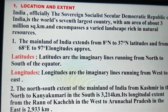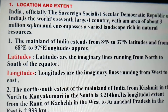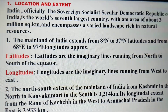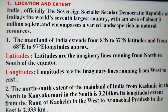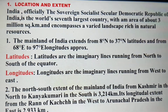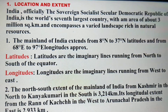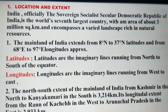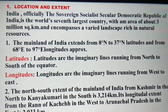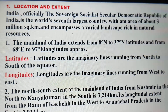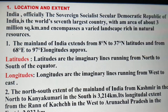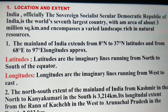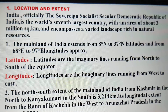Let's begin with the introductory part. First is location and extent. India, officially the Sovereign Socialist Secular Democratic Republic of India, is the world's 7th largest country, with an area of about 3 million square kilometers, encompassing a varied landscape rich in natural resources.